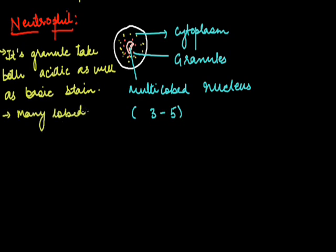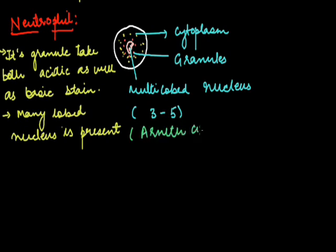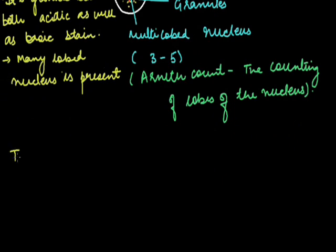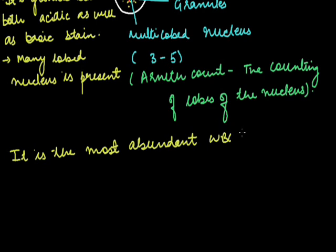The neutrophil has a many-lobed nucleus. The process involved in the counting of these nuclear lobes is called as Arneth count. Neutrophil is the most abundant WBC, comprising around 60 to 70 percent of total WBC.